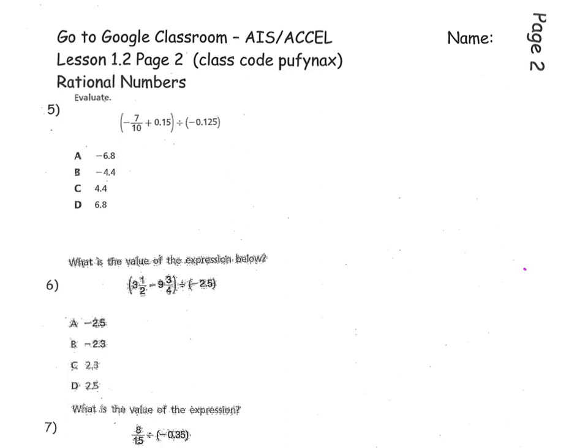Welcome to page two of your Excel lesson. This is lesson 1.2. You should be on page two of your packet. We're starting with question five, and we're going to be looking at how to deal with rational numbers. As we go through this entire page, we're always keeping in mind the order of operation rules.